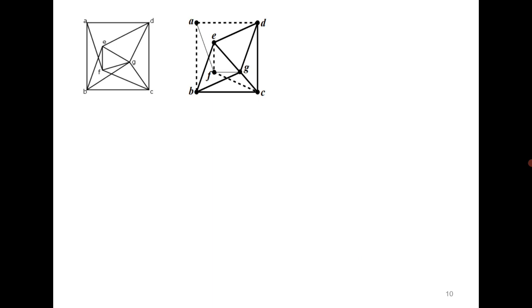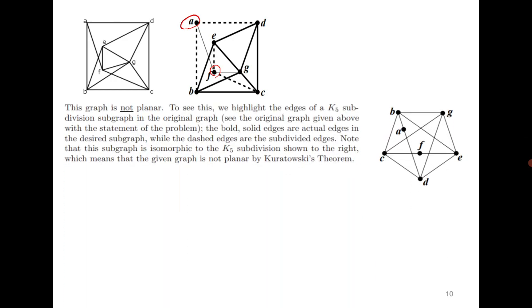Next question. This graph has 5 vertices of degree 4 or more, so it may have a subgraph homeomorphic to K5. If you delete edges A-F and F-G, then the degree of A becomes 2 and the degree of F becomes 2, while the remaining vertices have degree 4 or more. This is how a subgraph homeomorphic to K5 looks.